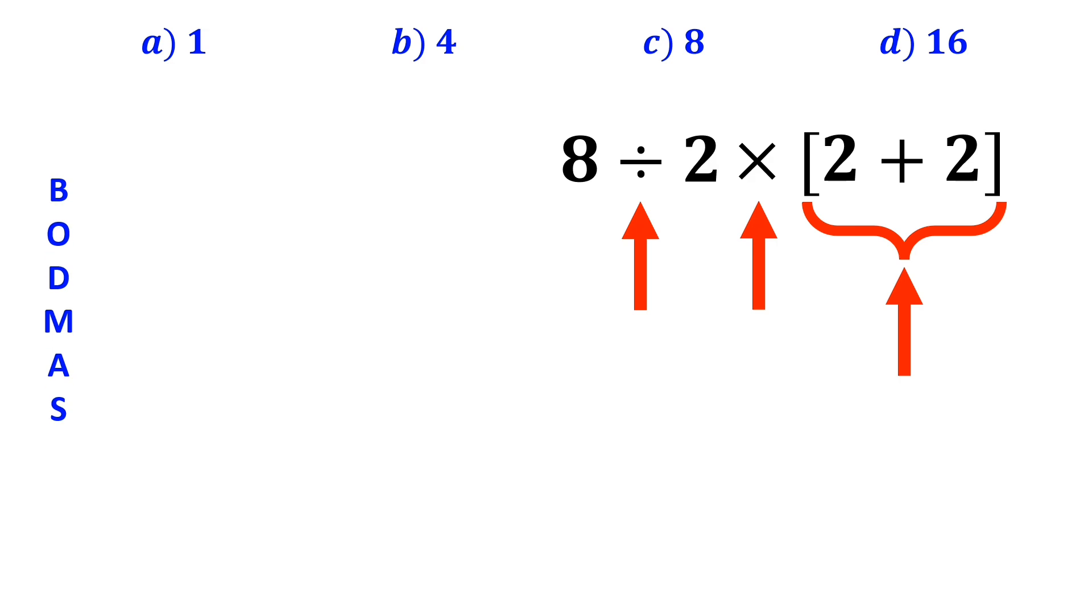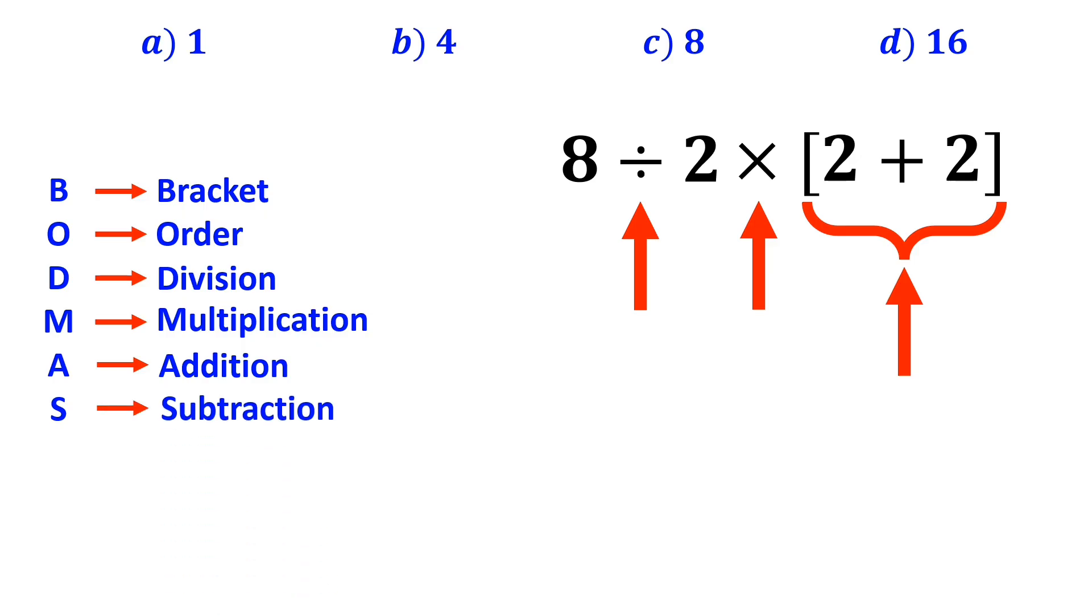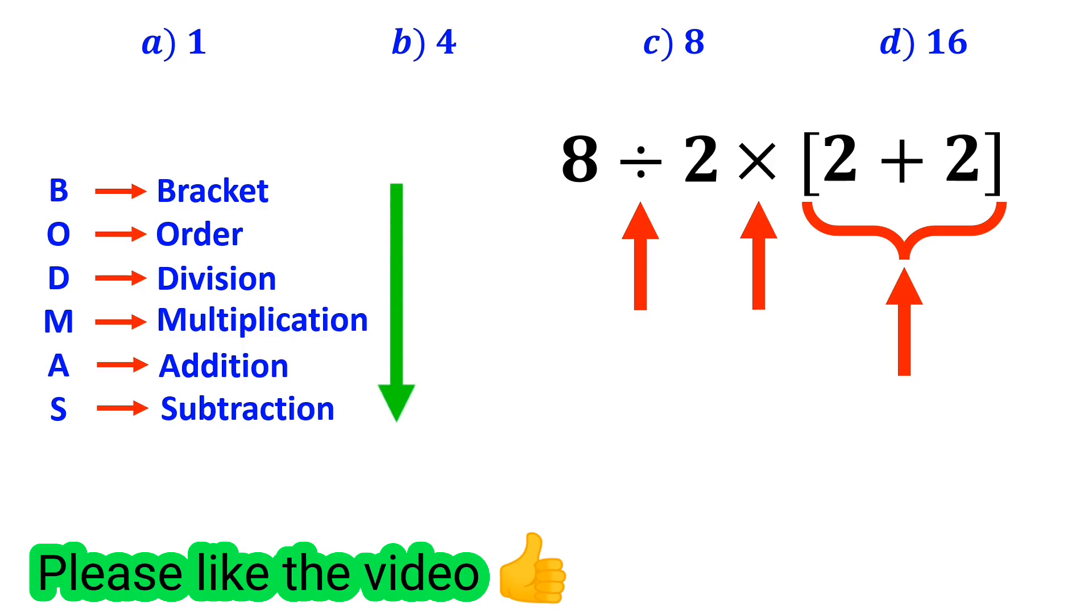In this rule, B stands for bracket, O stands for order, D stands for division, M stands for multiplication, A stands for addition, and S stands for subtraction. We need to perform these operations in order from top to bottom.